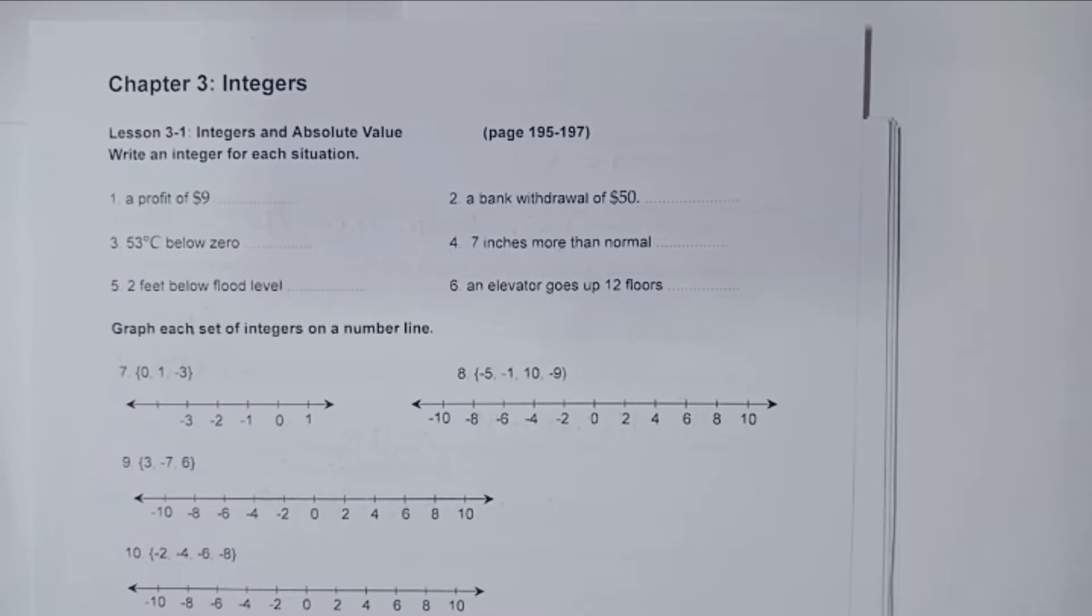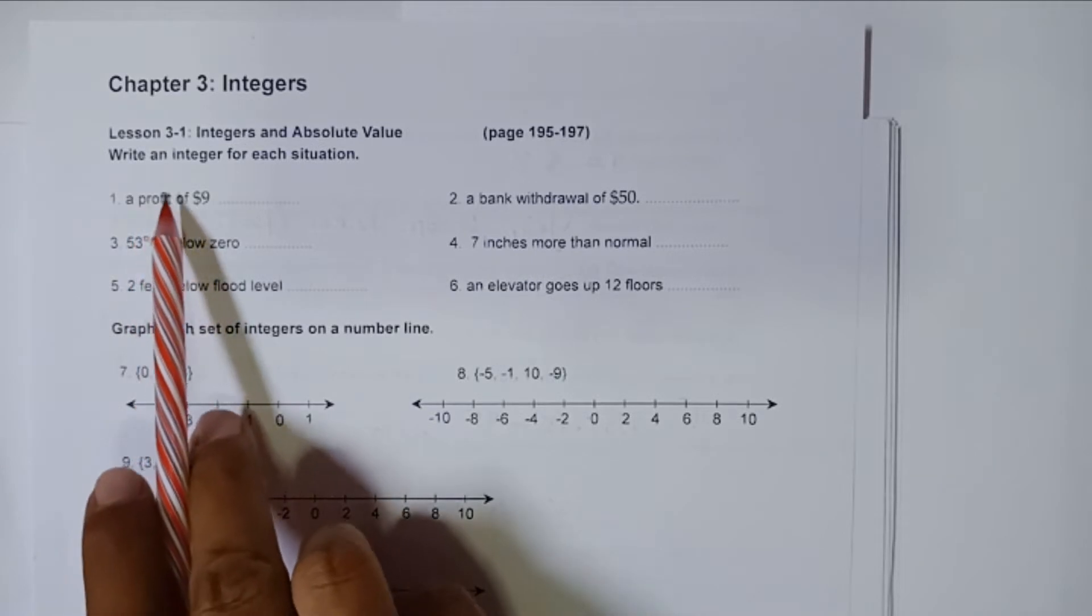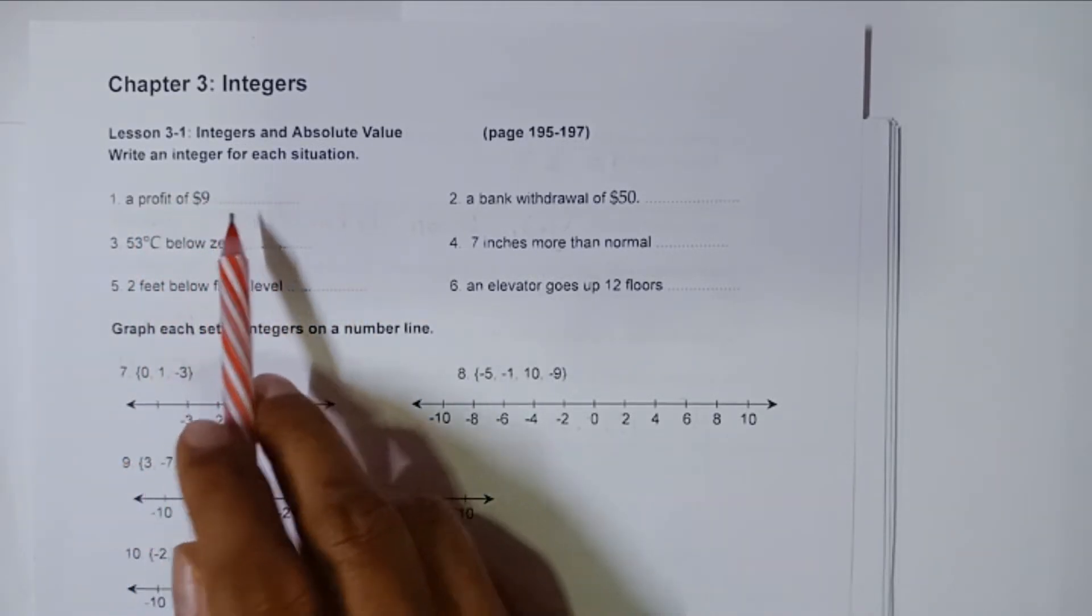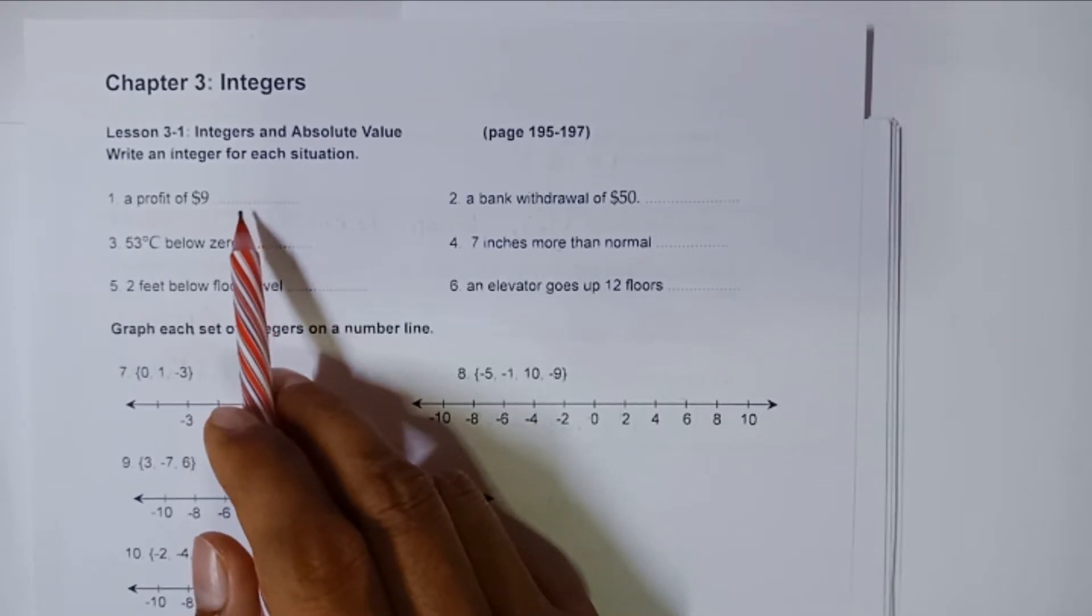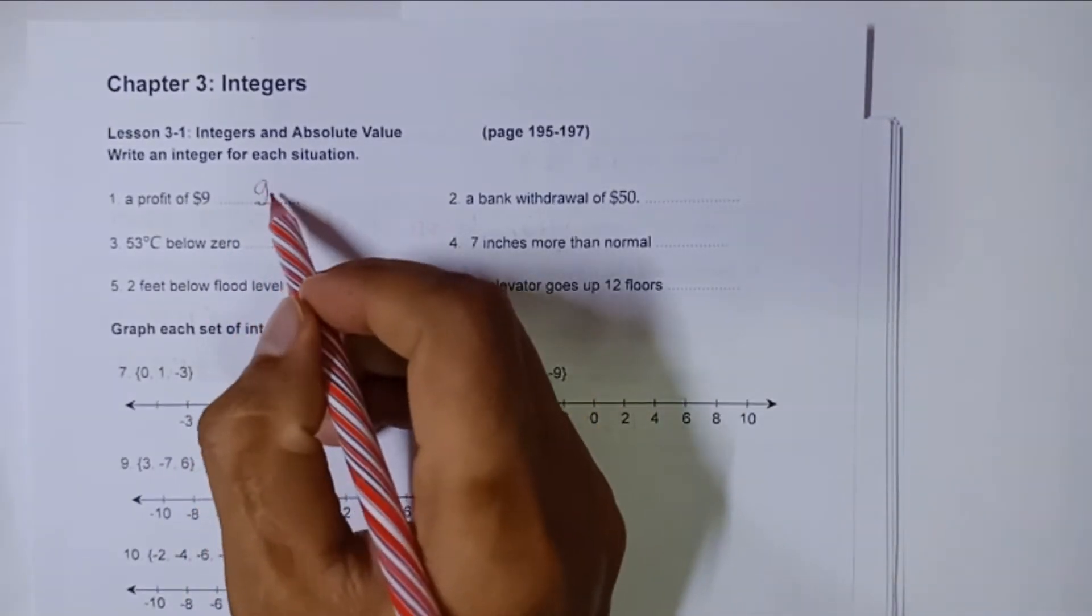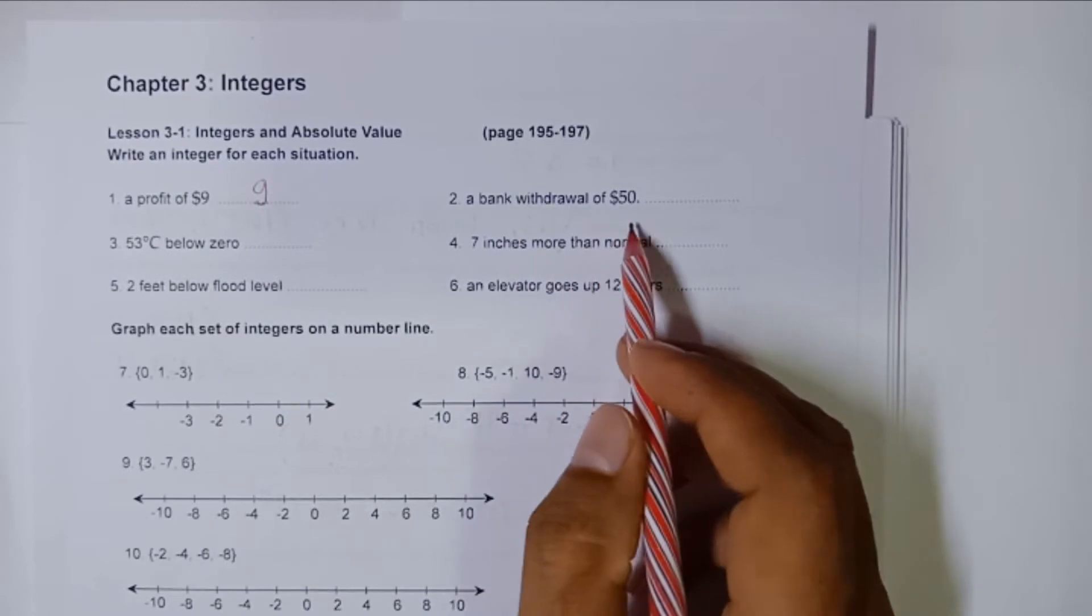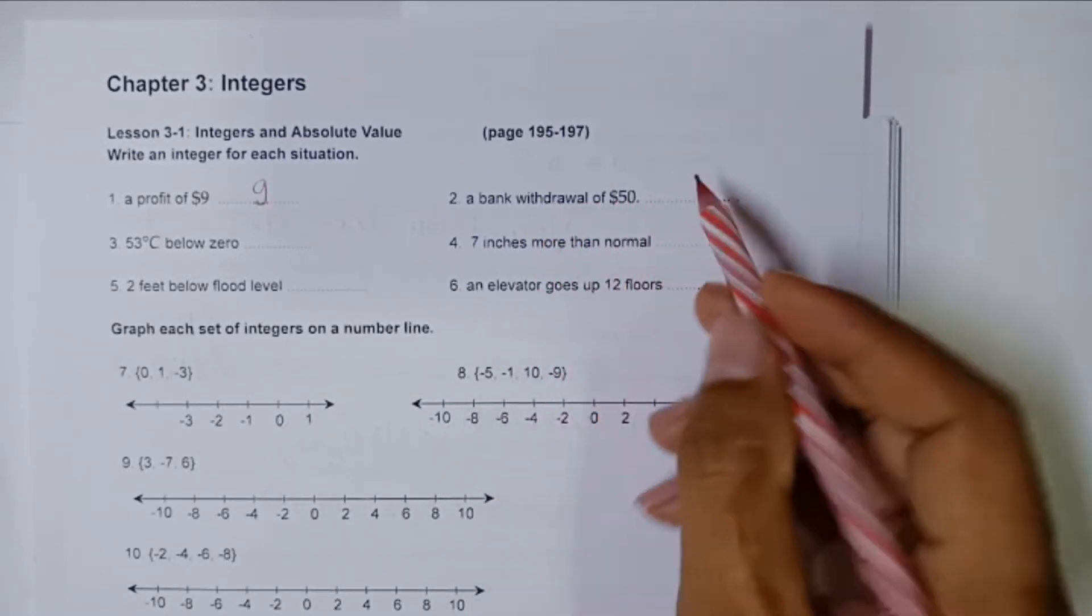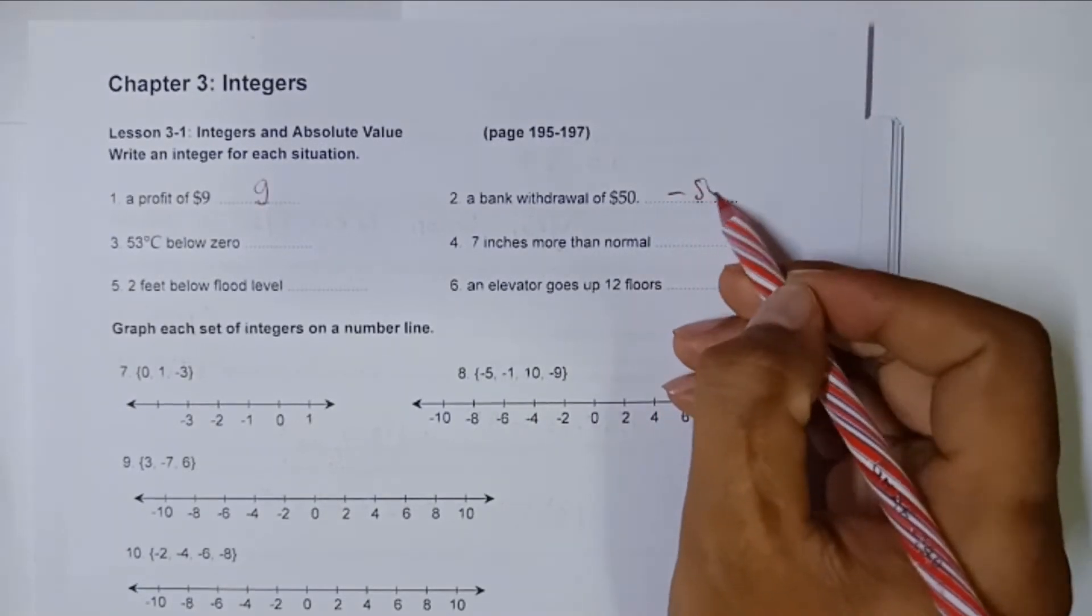Lesson 3-1: Integers and Absolute Value. Let's write an integer for each situation. A profit of nine dollars is represented by the integer nine. And then a bank withdrawal of fifty dollars, which means you take away fifty, so you're going to be minus fifty.